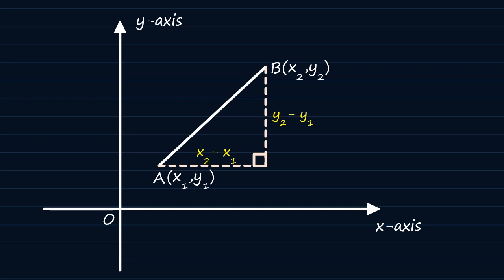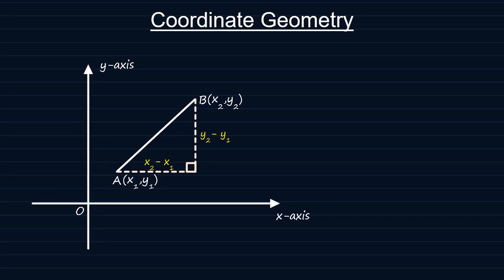Now, I would want you to consider this right angle triangle. If we are to apply Pythagoras theorem to find the length of the line AB, then AB squared should be equal to x2 minus x1 squared plus y2 minus y1 squared.